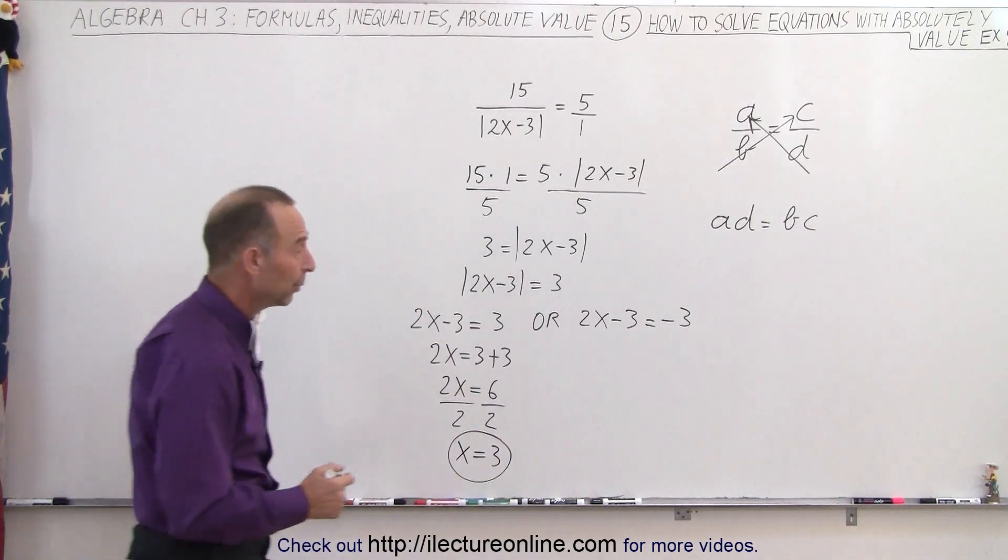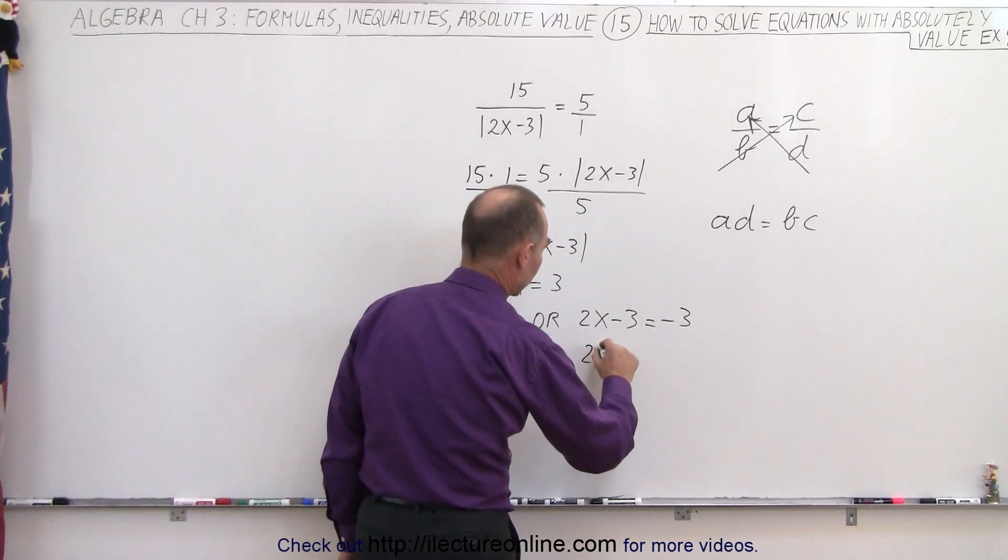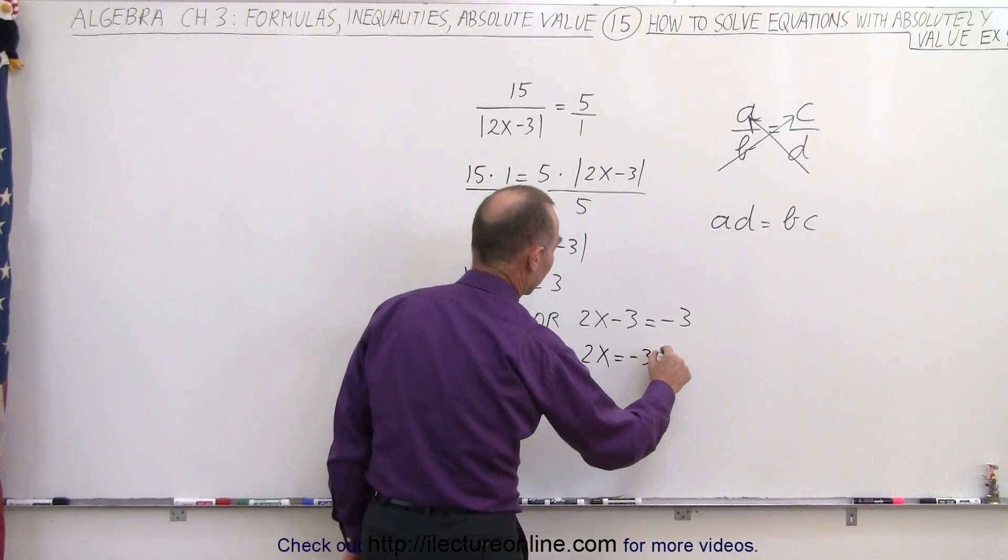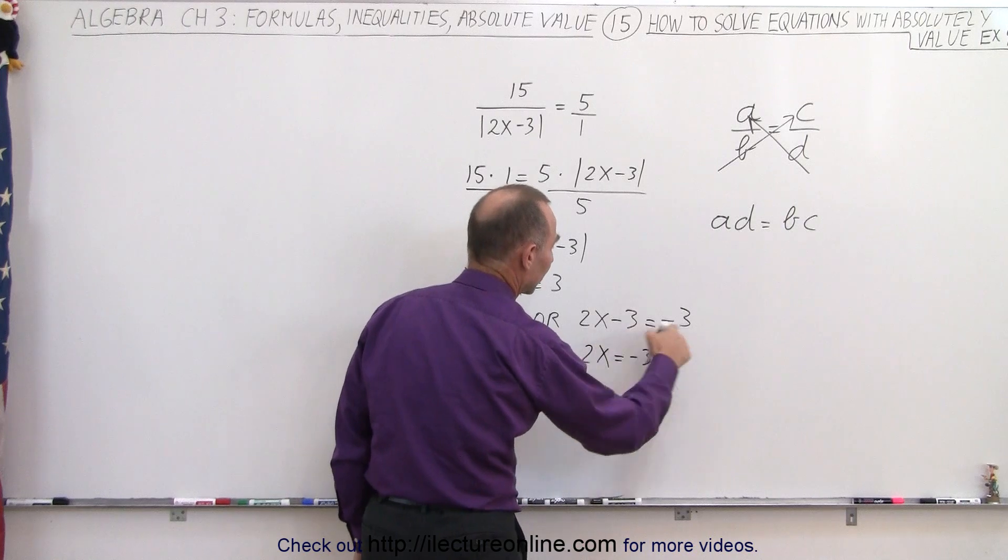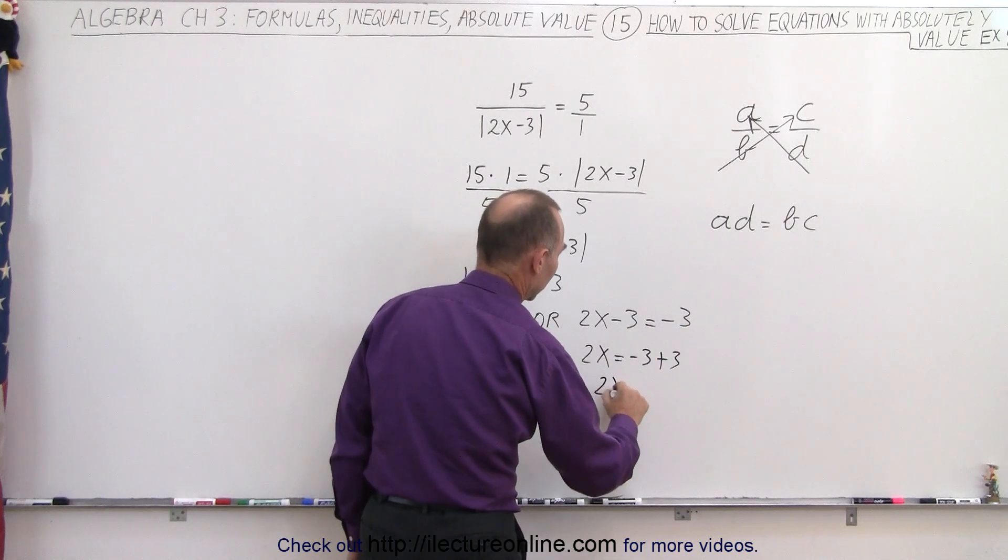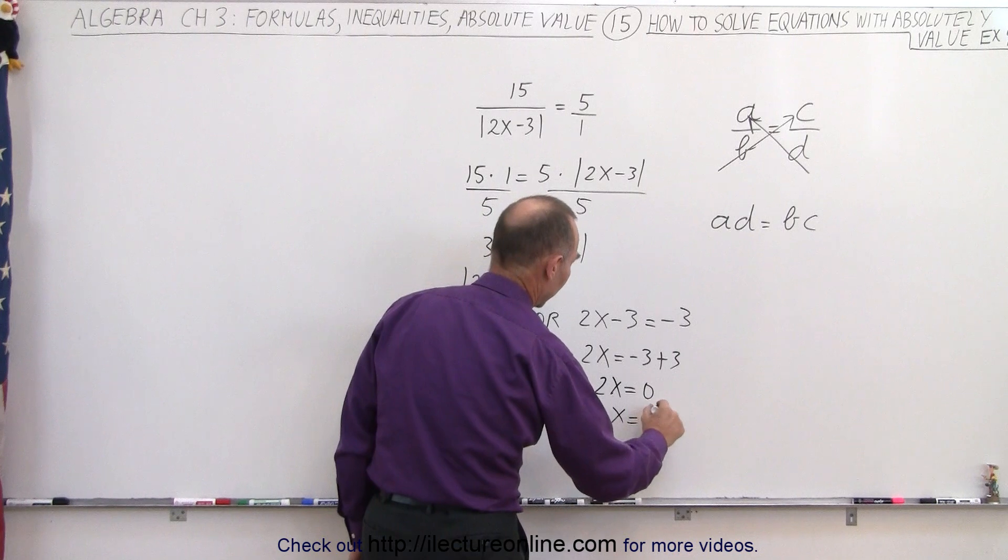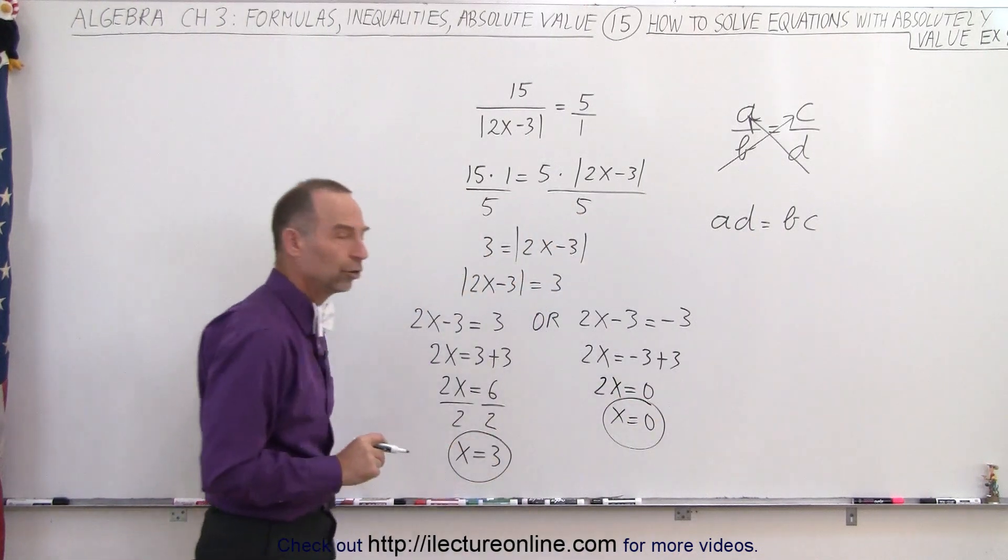On the right side, we end up with 2x is equal to negative 3 plus 3 when we move the negative 3 across. So 2x is equal to 0, or x is equal to 0. So those are the two possible solutions.